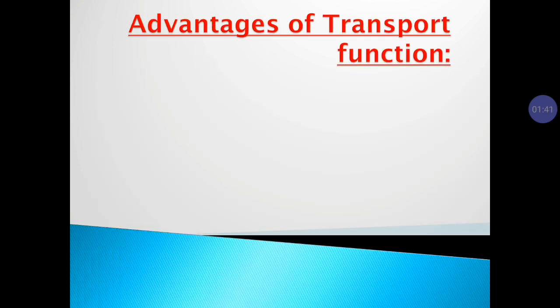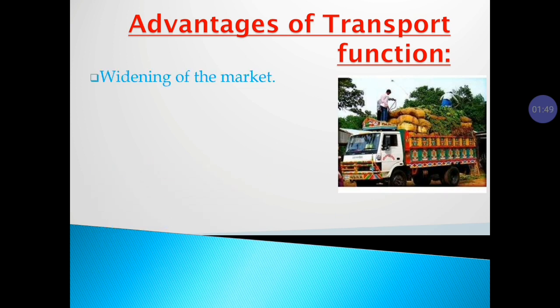Now we will look into advantages of transport function. There are many advantages, like widening of the market. It is because of transport that agriculture commodities are offered not only in local areas but in national markets, regional markets, or even across borders in international markets. So transport facilitates the widening of the market.